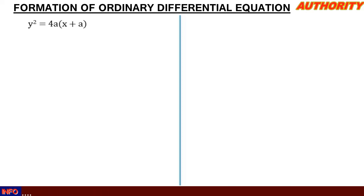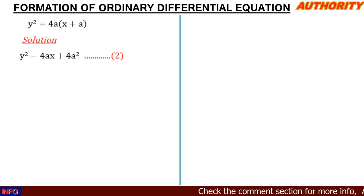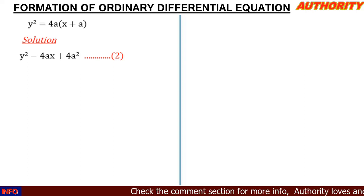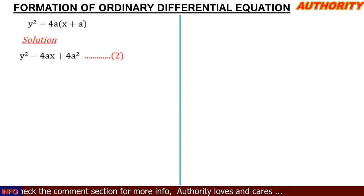The first thing we do is make the right-hand side normal by opening the bracket. That means we are going to have y² = 4ax + 4a². We used 4a to open the bracket. We can call this equation 2.